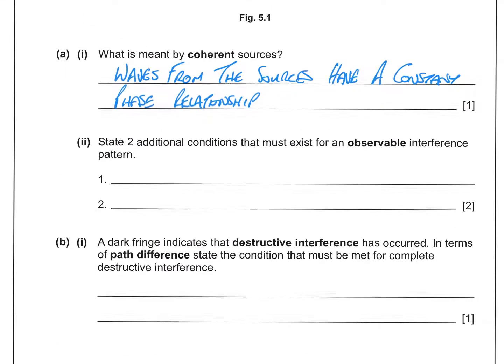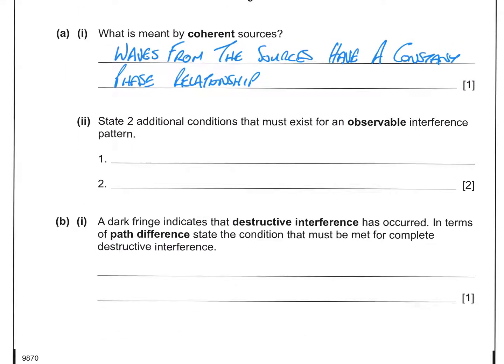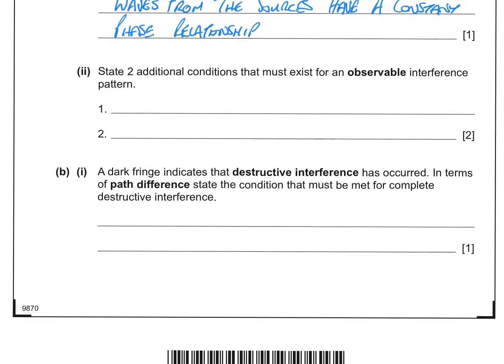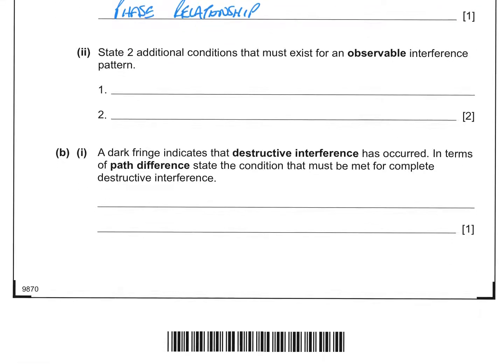So state two additional conditions that must exist for an observable interference pattern. To answer this, we have to think about what causes an interference pattern, and it's destructive interference. Now for destructive interference to happen, what has to be true about the two sources? Well, they have to have similar amplitudes.